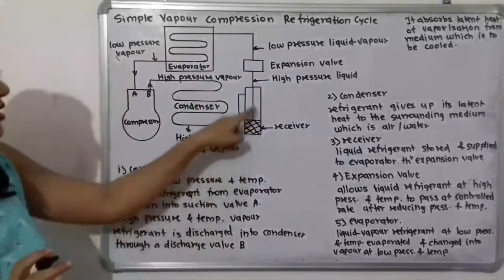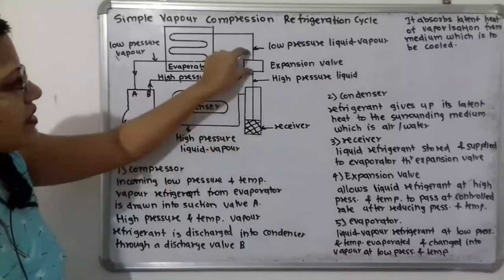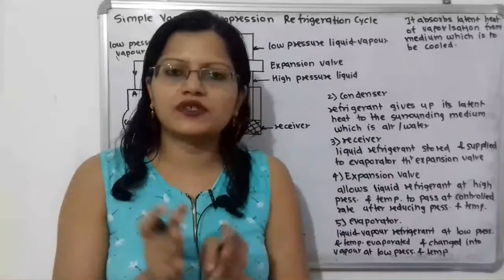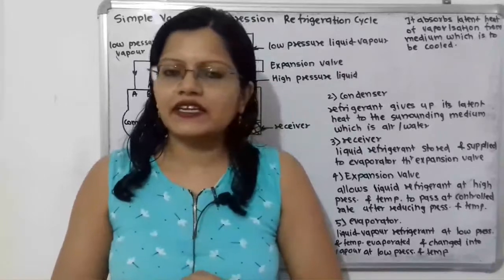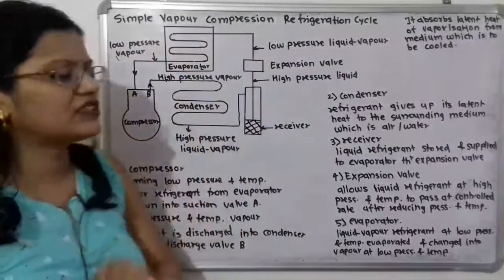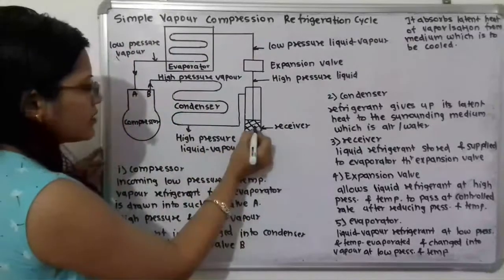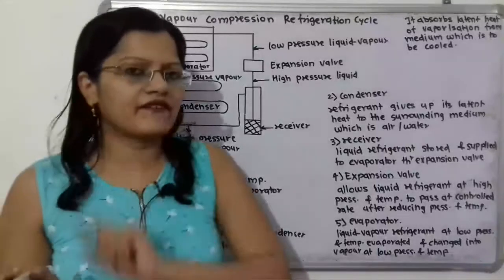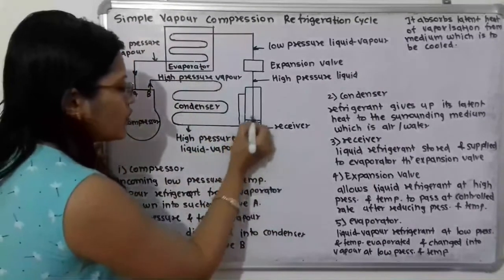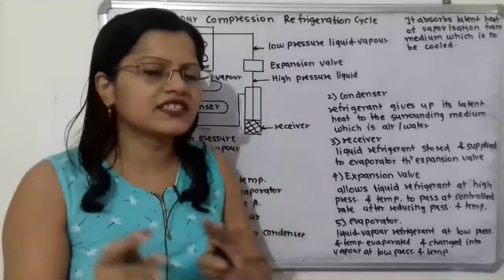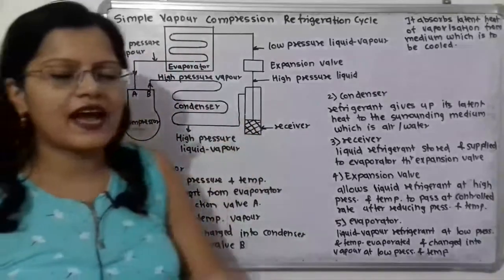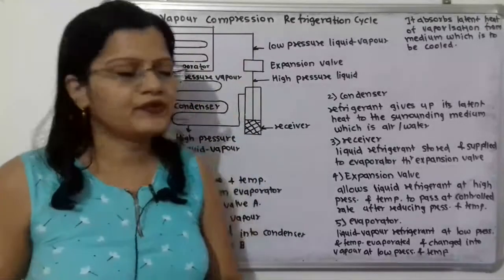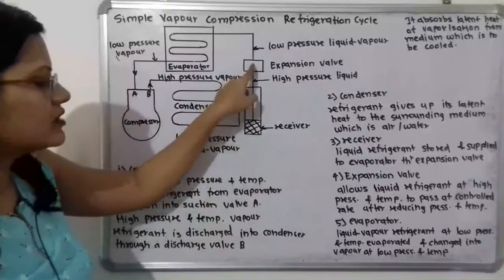After the receiver, the refrigerant is supplied to the expansion valve. In the expansion process, the pressure is slightly decreased — partial expansion is taking place. In the receiver the refrigerant is at high pressure and high temperature but in liquid form. Remember, only the phase of the refrigerant is not changing here; it remains in liquid form but at high pressure and high temperature.